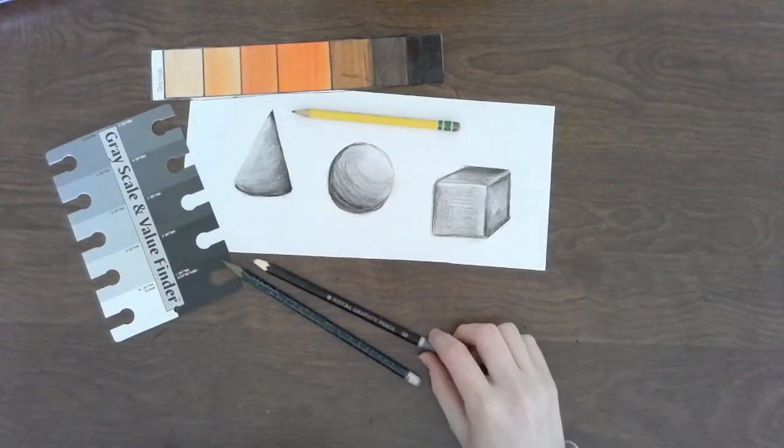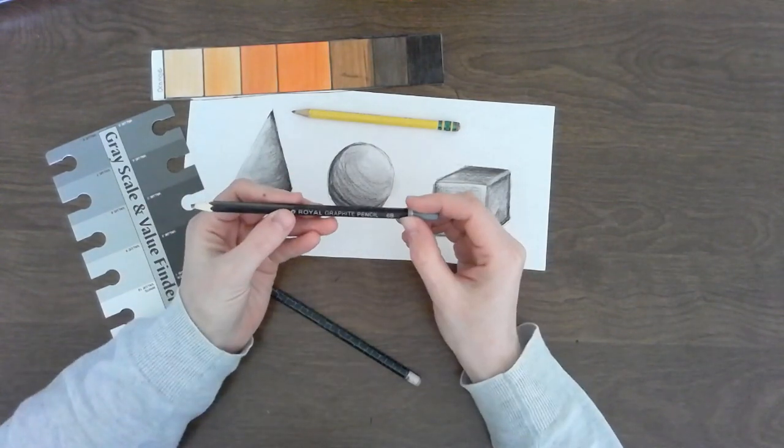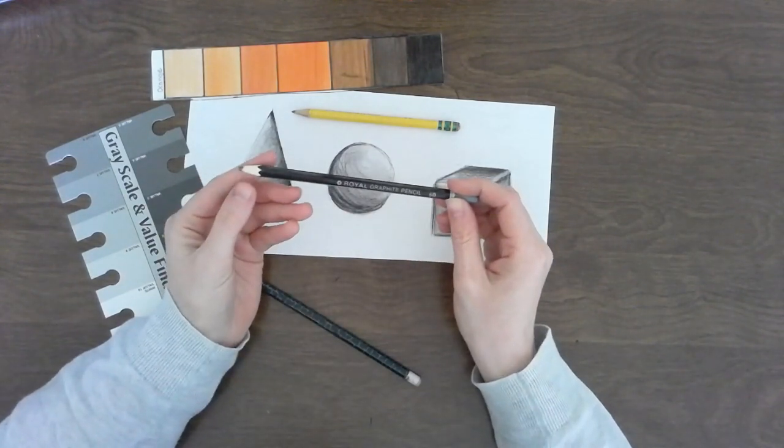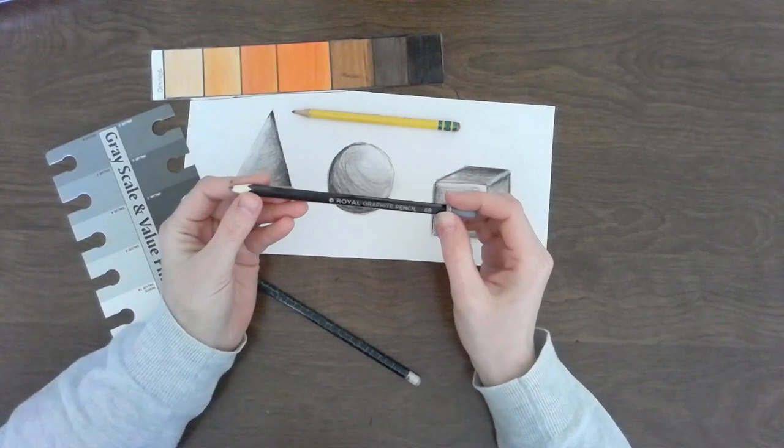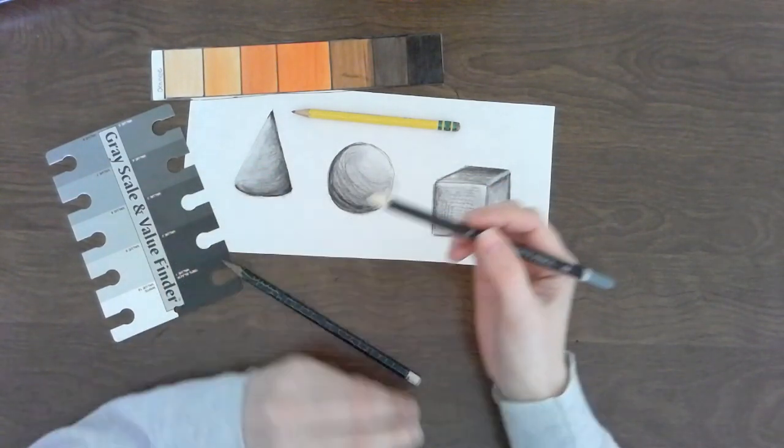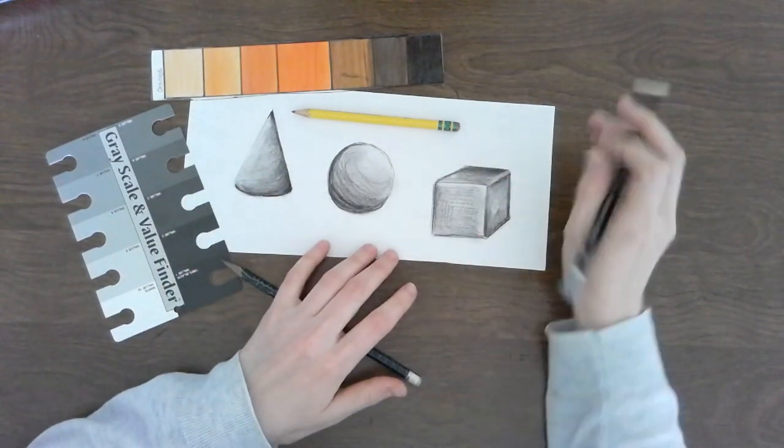This pencil here is a 6B pencil. That means the pencil lead is super soft and it makes very dark lines when I color with it.